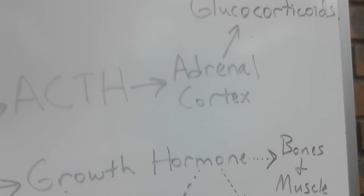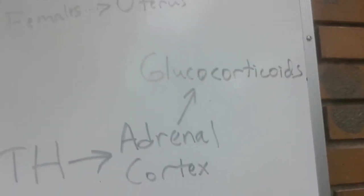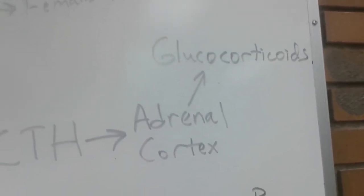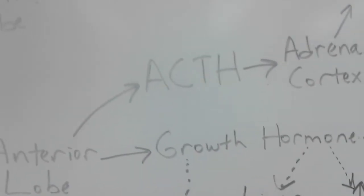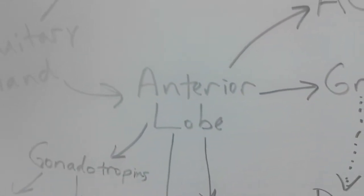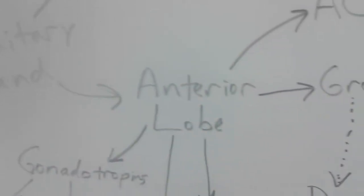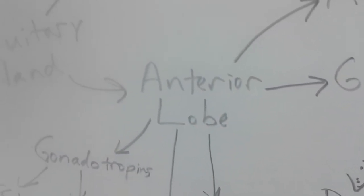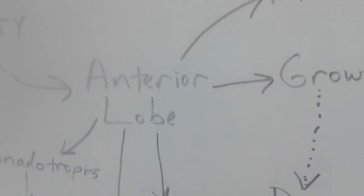So the adrenal cortex is the outer portion of the adrenal gland and those produce things like glucocorticoids and that's because ACTH is released from the anterior lobe of the pituitary gland.